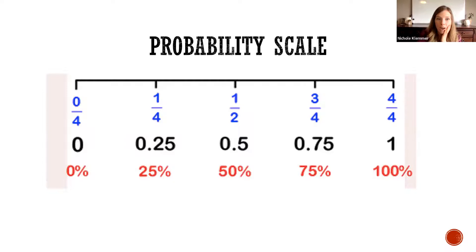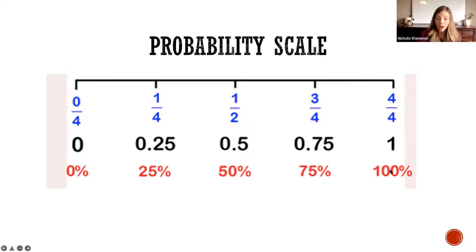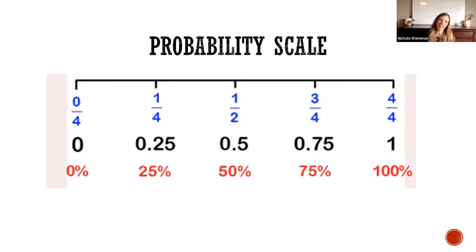For probability we always use a scale. The lowest number you can use is zero and the absolute highest is one, or 100%. My husband once said there's a 150% chance that you're not going to the sleepover — I laughed because 150% in terms of probability doesn't really make sense. Sometimes people use it in real life, but really the highest we should use is 100%.